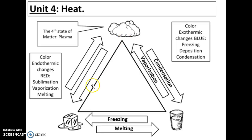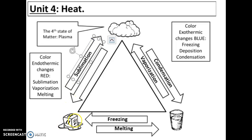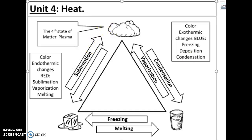We only have two more arrows to fill in. A pretty cool one — hopefully we'll get a chance to bring in some dry ice this year. Anytime that you have a solid turning directly into a gas — not liquid and then to gas — this phase change is called sublimation. Dry ice actually does that. It's a solid block of carbon dioxide that sublimates directly into a gas. Check out those videos if you've never seen dry ice — we'll try to get that in class so you can see it firsthand.